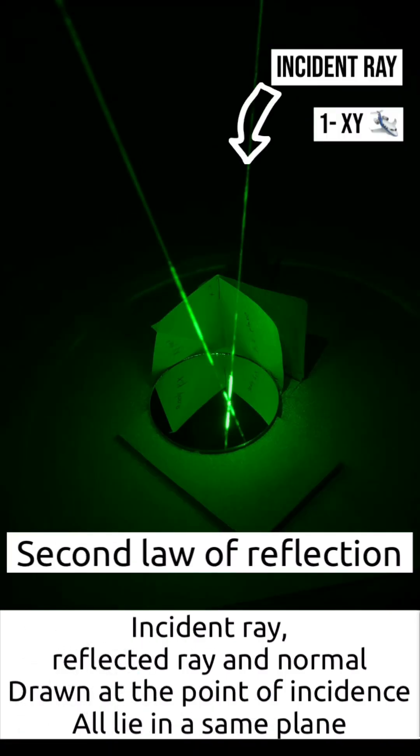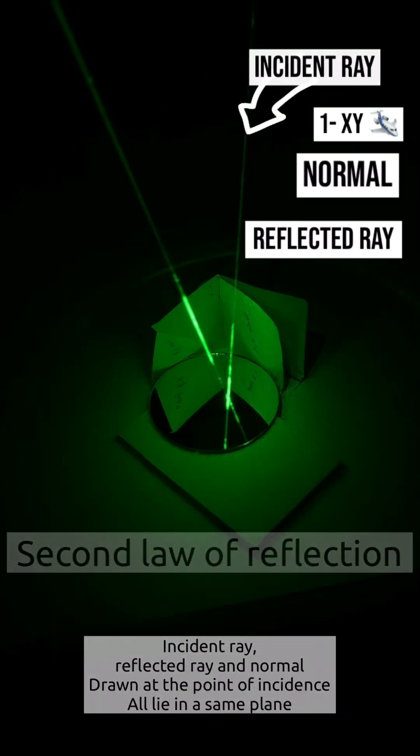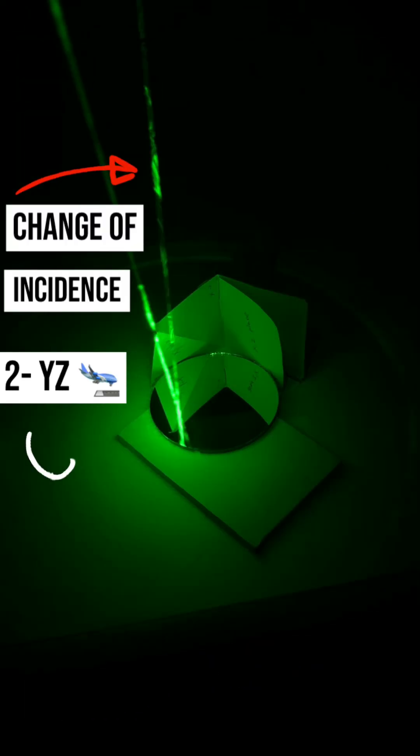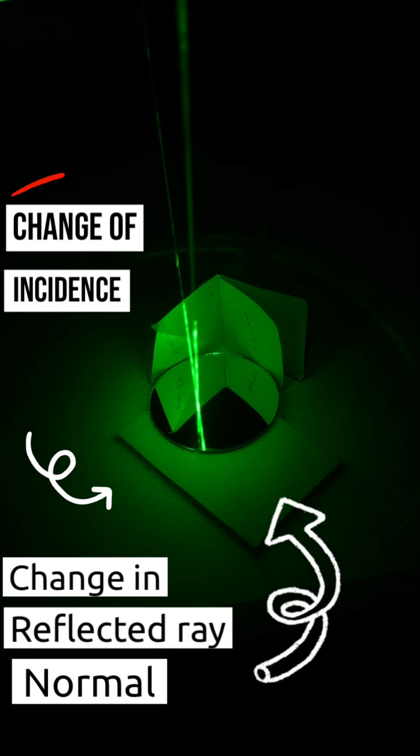Since the incident ray is in the x-y plane, therefore the normal and reflected ray are also in the x-y plane. As the incident ray changes and enters the y-z plane, the normal and the reflected ray change the plane.